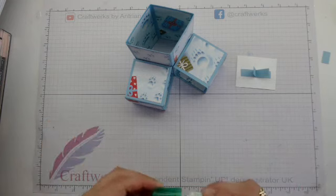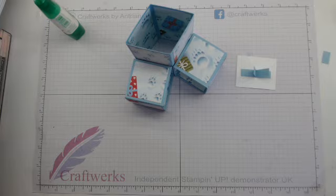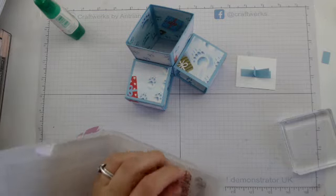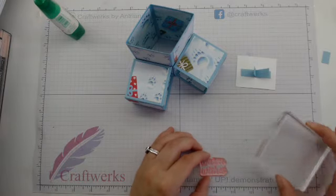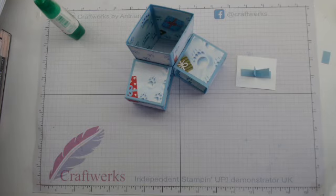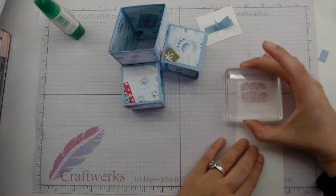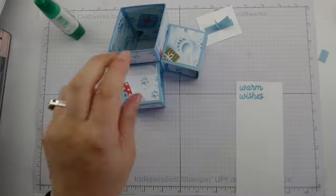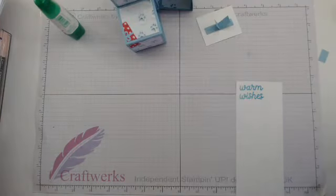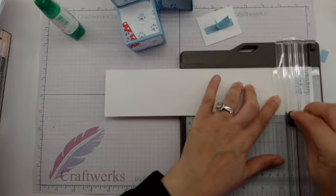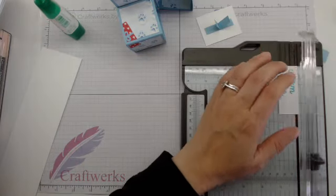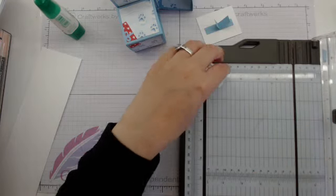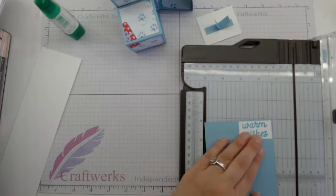I'm just going to set that aside just for a second because I want it to dry. I'm going to get my Balmy Blue ink and my stamp for warm wishes. I've got a piece of scrap paper which is here, and I'm going to trim this down.